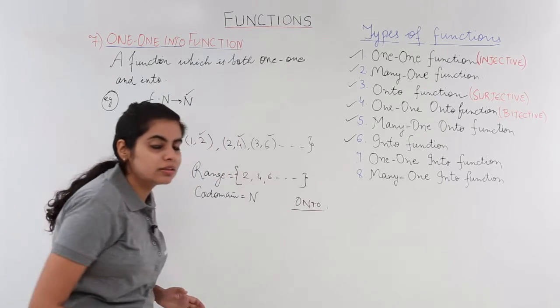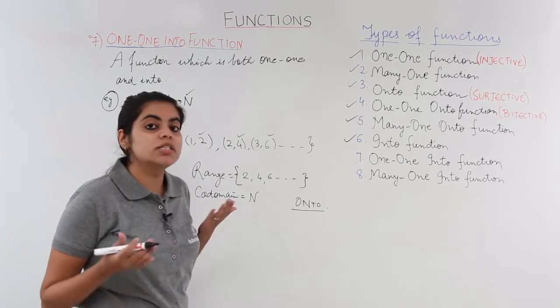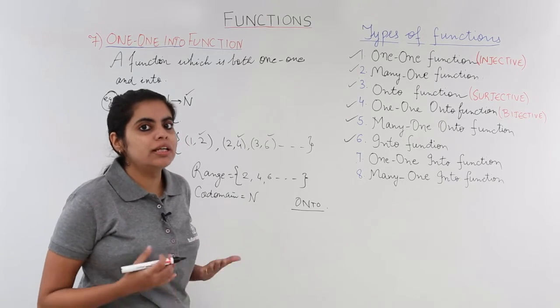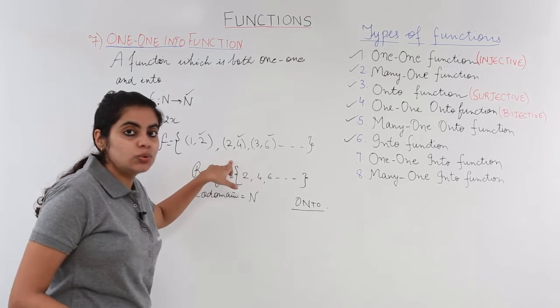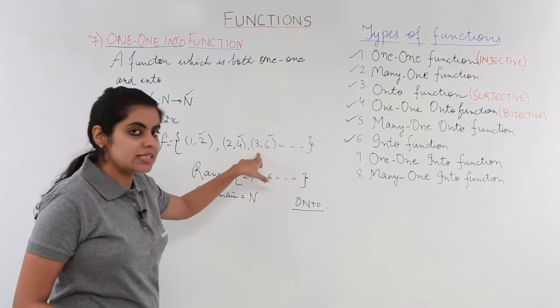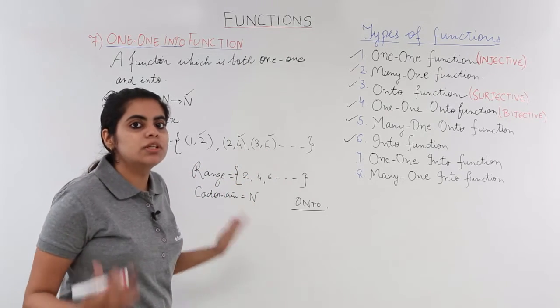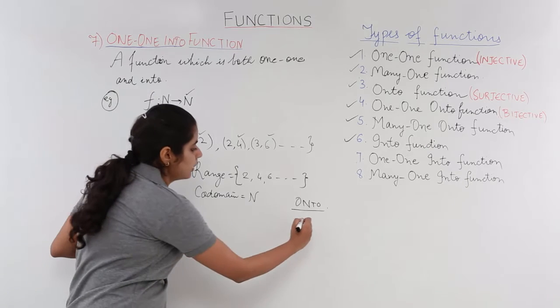Now what about being one-one? It is one-one because different elements have different images. You see, 1 has the image 2, 2 has the image 4, 3 has the image 6—different elements with different images, so it is one-one also.